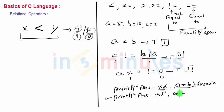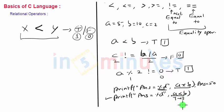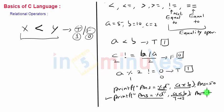Now if we use a relational expression, what would the output be? If we write printf("answer is equal to %d", a < b), a less than b is a relational operator so it will generate an answer as true or false, that is 1 or 0. In our case a less than b is true, that is 1. Hence the output of this will be: answer is equal to 1.